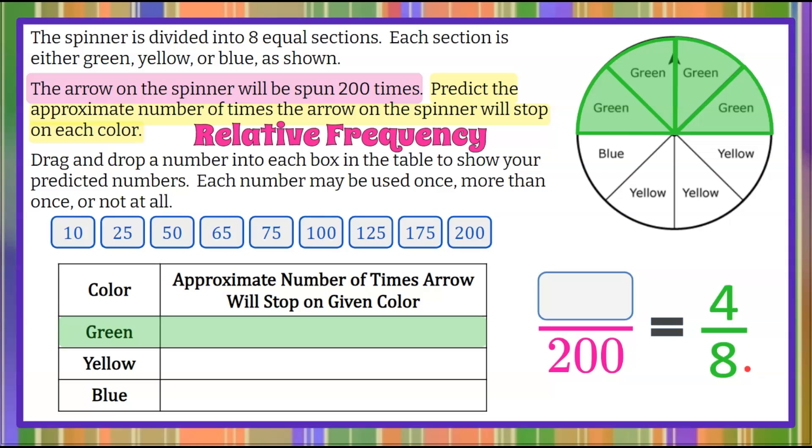In our experiment, our relative frequency is how many times it happens out of 200. We know the more often we conduct an experiment, the closer it gets to that theoretical probable outcome. And in theory, one half of the times, or four out of eight times, we should get green. So we're going to determine, we're going to solve this proportion.